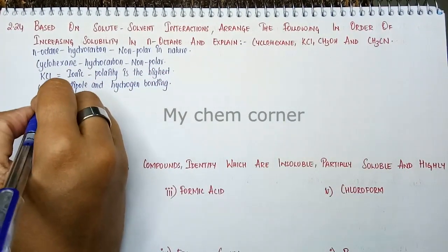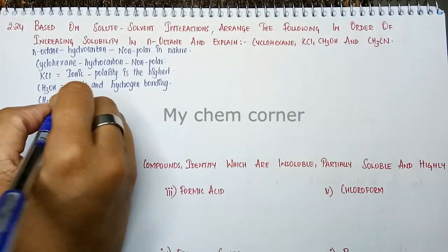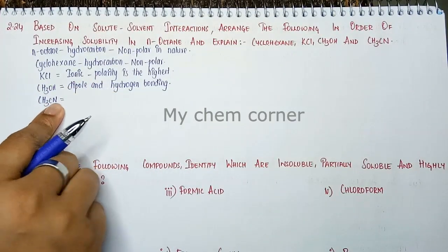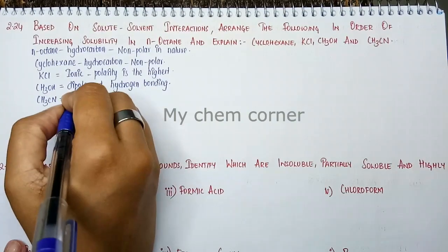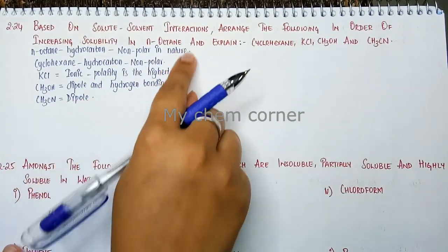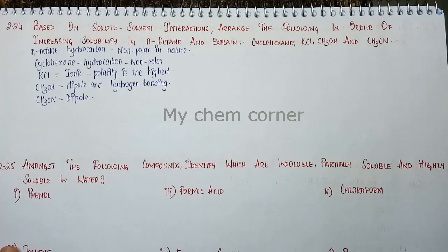The last compound is acetonitrile or CH3CN. In this case, all electrons move towards nitrogen, exhibiting a dipole moment. Now that you know what their polarities are.